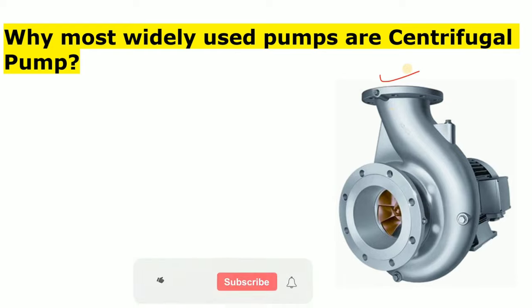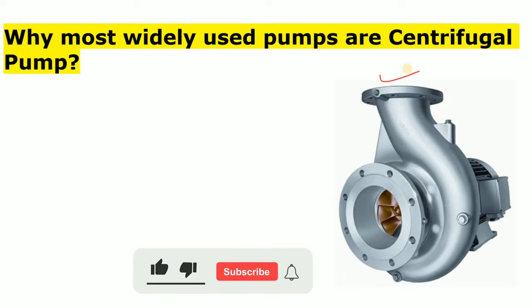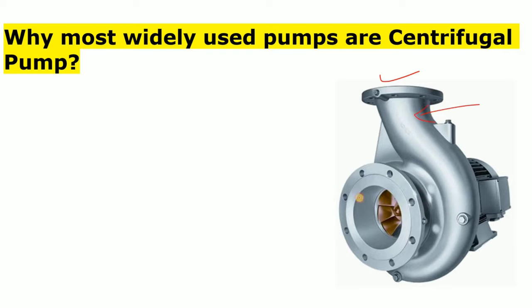The reason is that it is simple in construction. Here you can see that there is only this outer part, the internal part, and a motor — only these parts are used in a centrifugal pump. This means the construction is simple, giving it design simplicity and ease of operation.